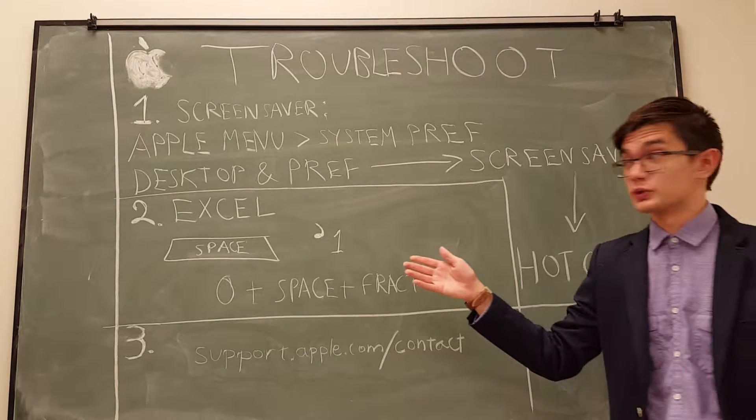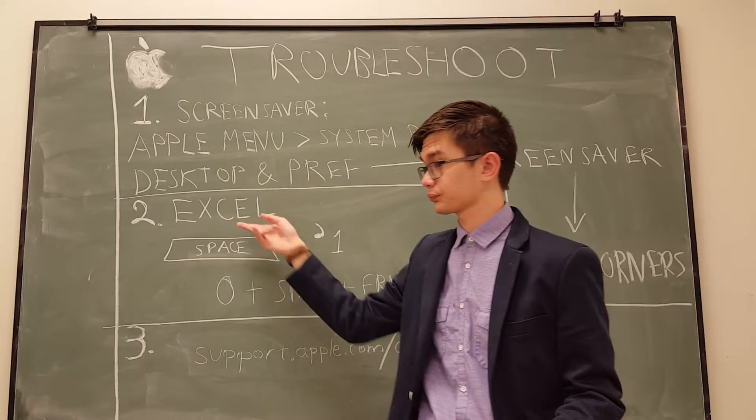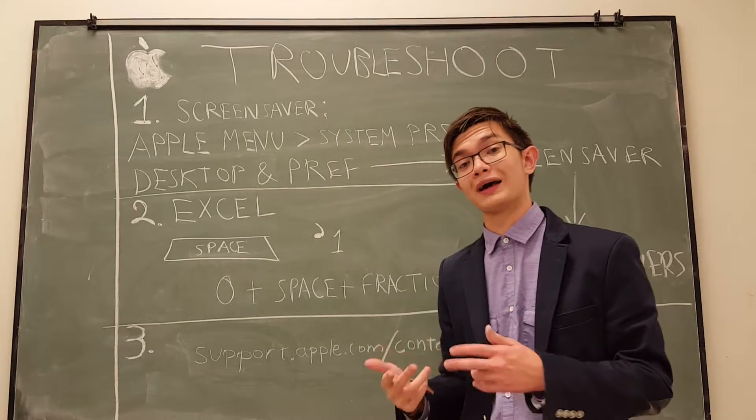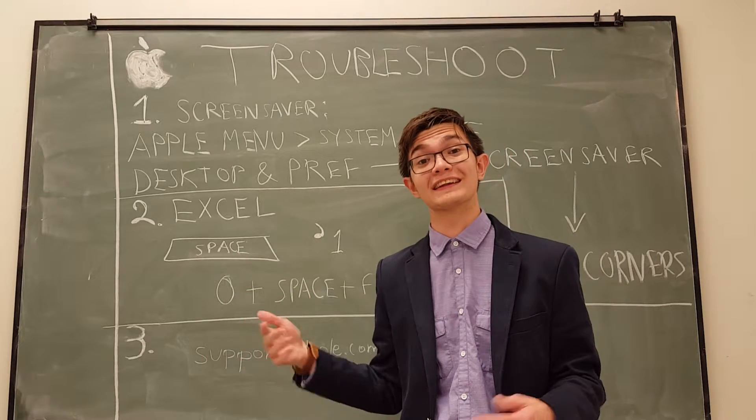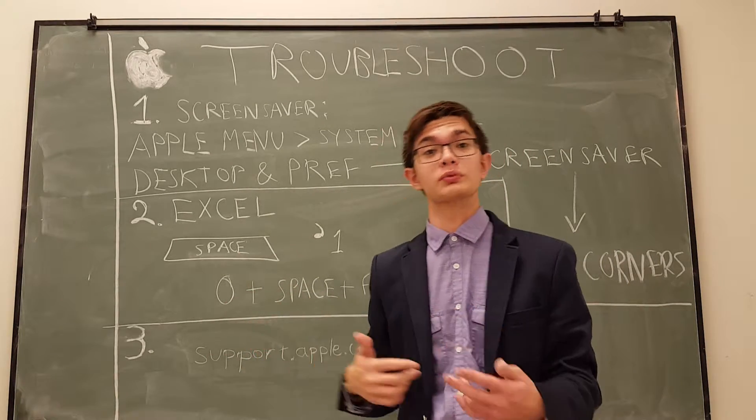Now the second issue that was mentioned is related to Excel. If your numbers automatically switch from one to another, chances are that's related to the system thinking that the numbers are representing dates.